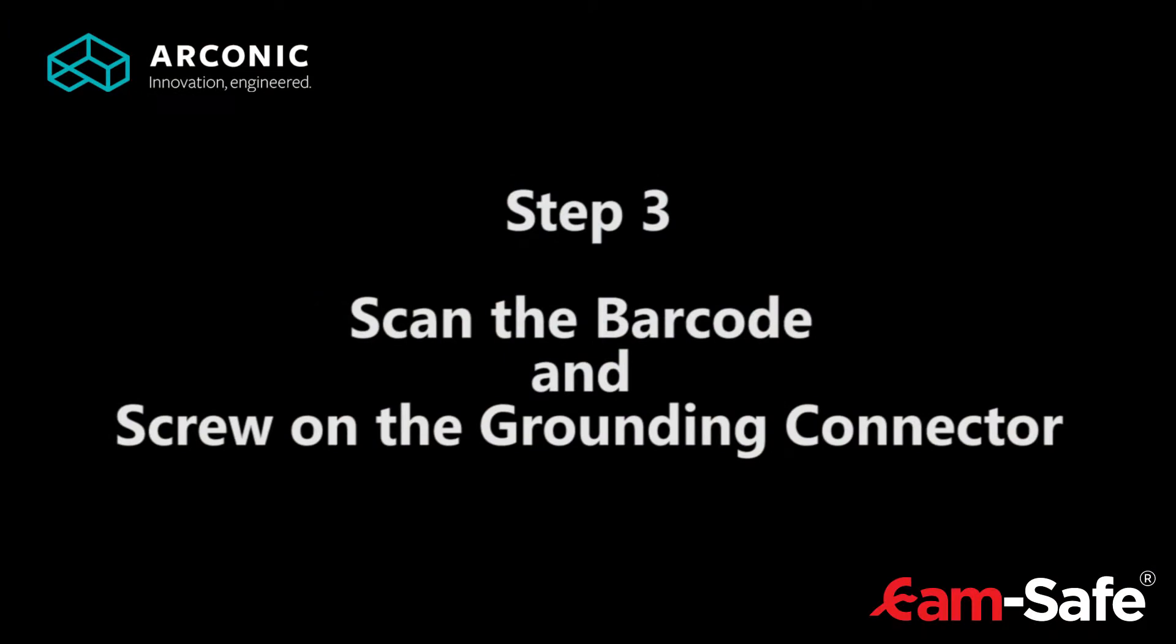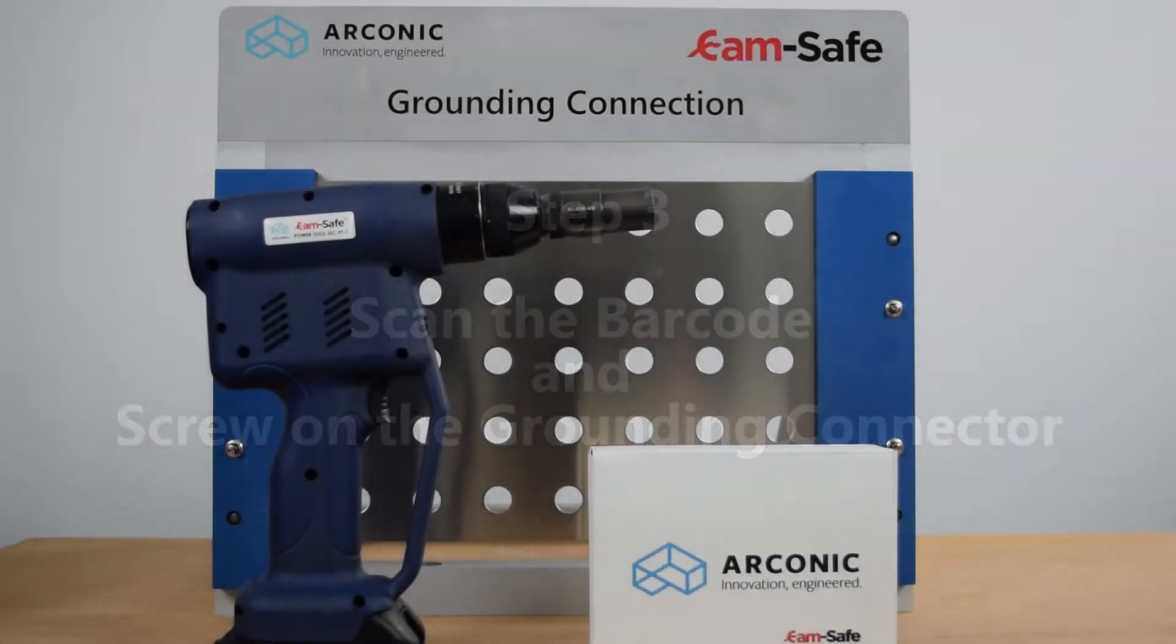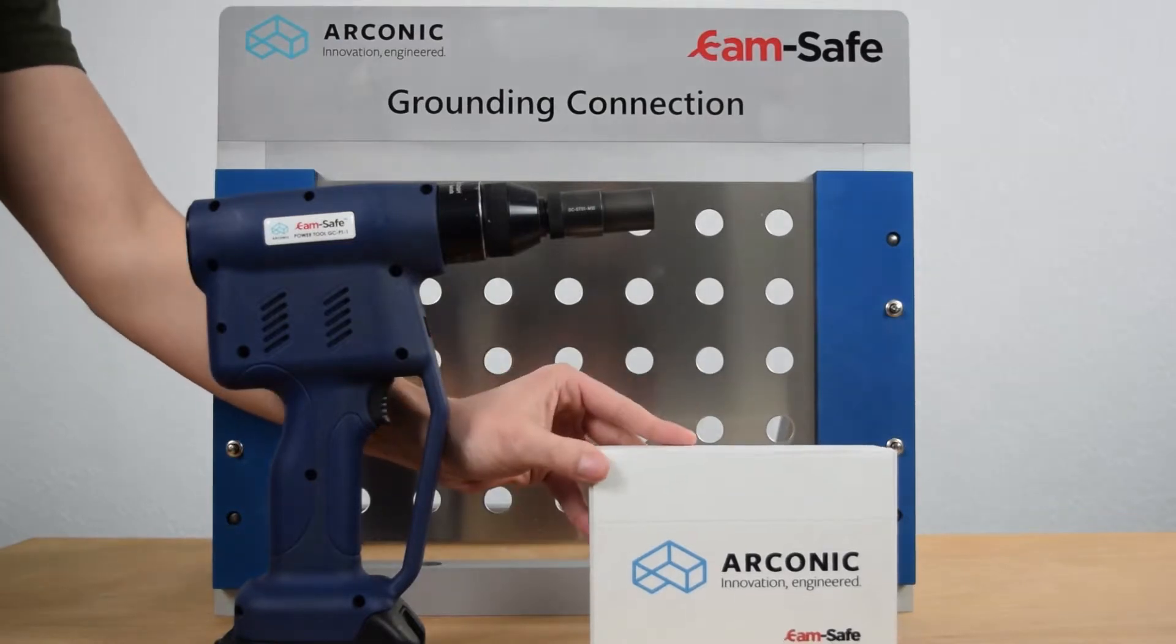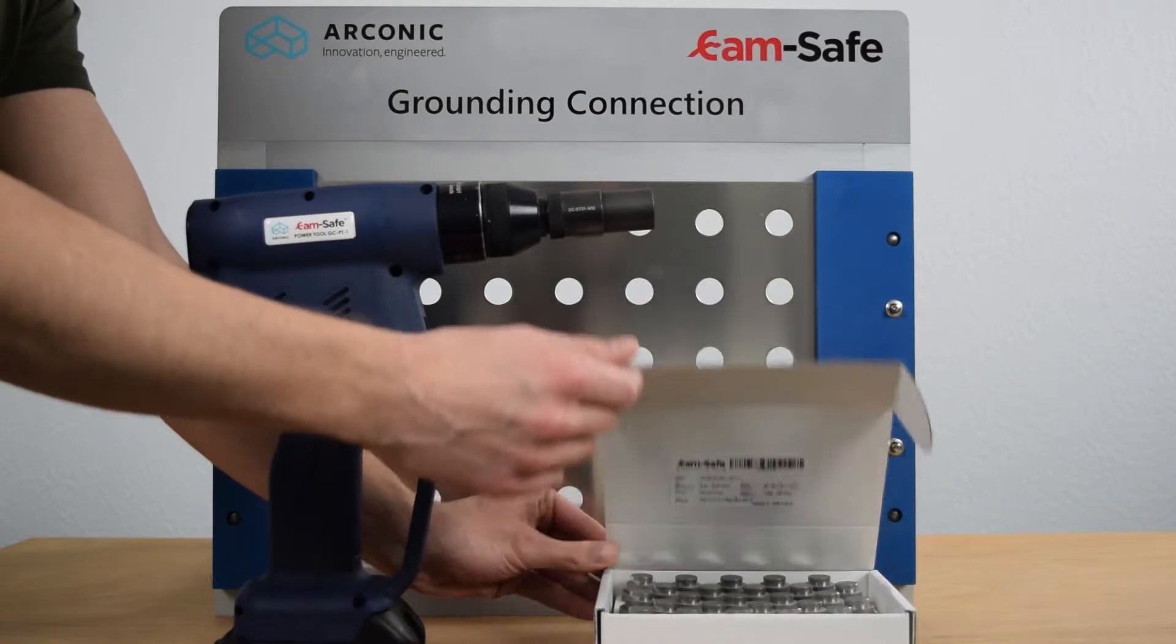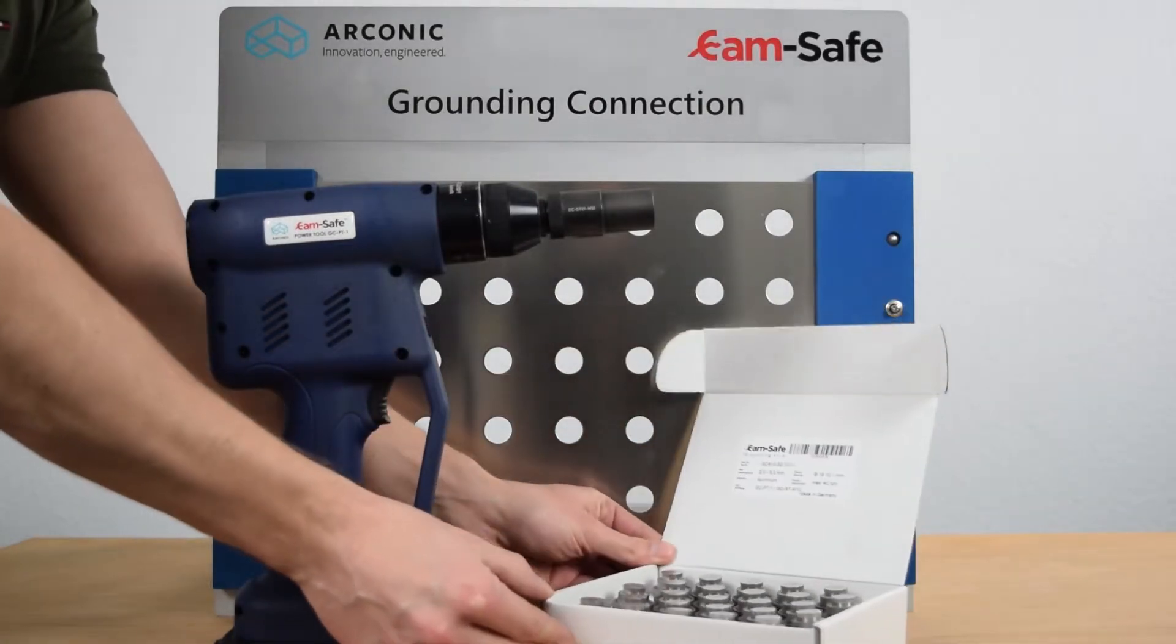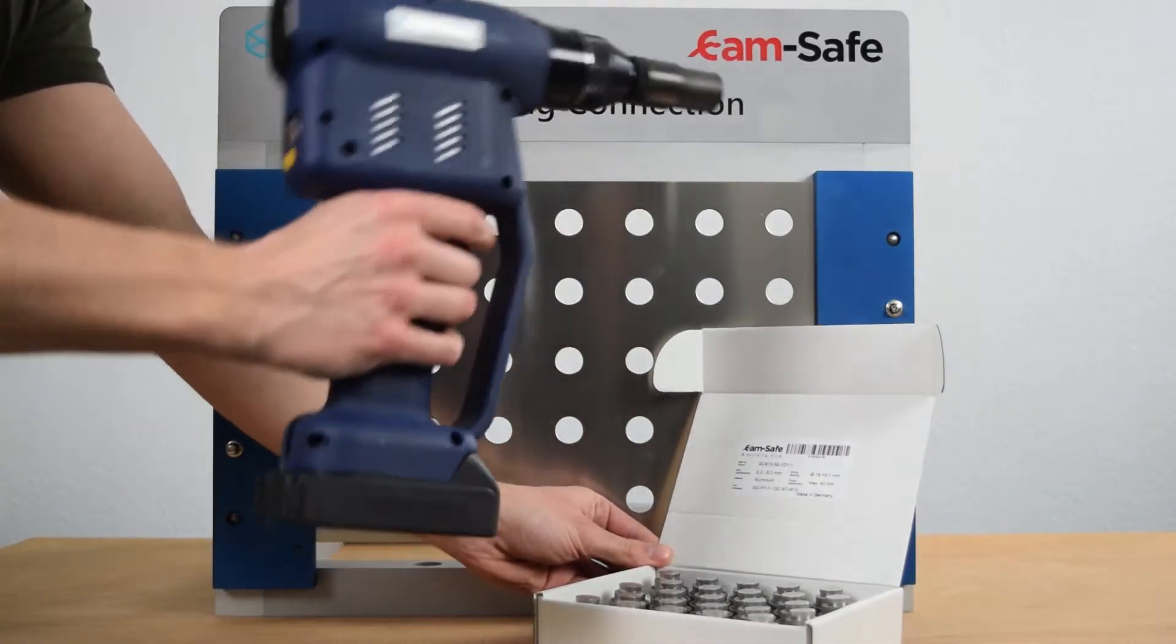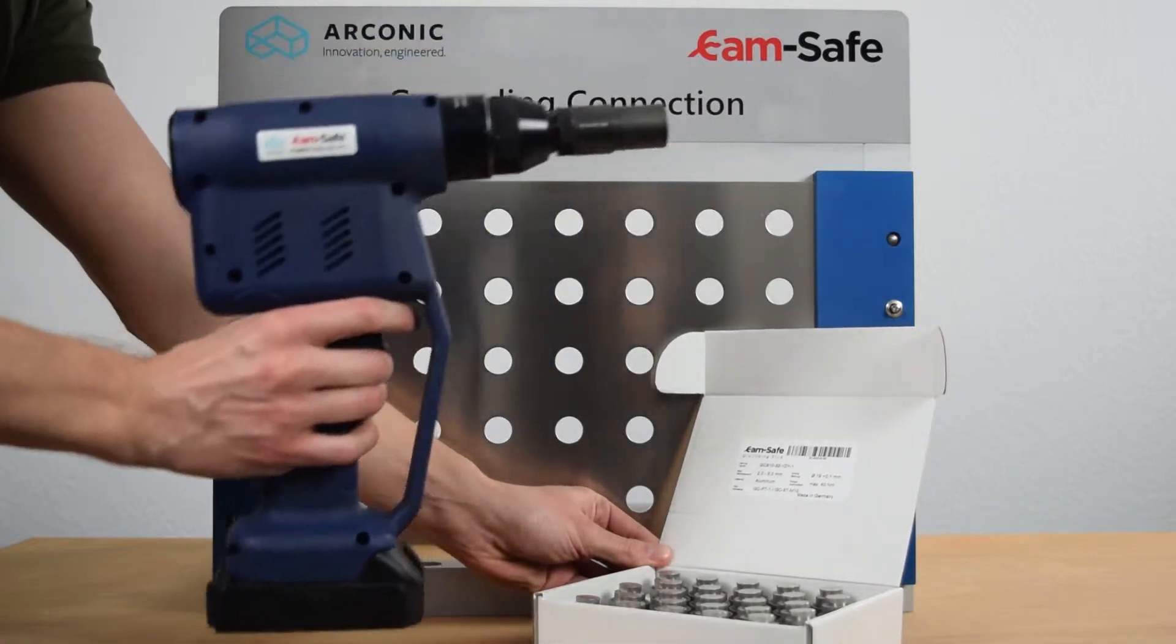Step 3: Scan the barcode and screw on the grounding connector. The respective barcode can be found inside the box of the connector that should be installed. Press the trigger while scanning the barcode and wait until you hear the signal.